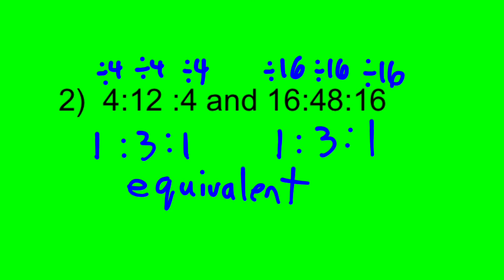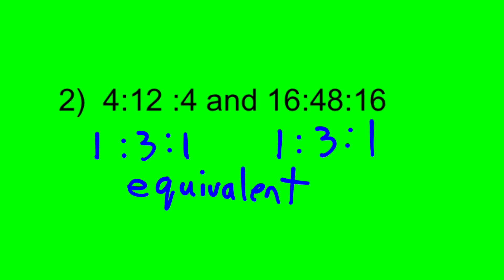You might also recognize that the second ratio is actually 4 times the size of the first ratio. So 4 times 4 equals 16, 12 times 4 equals 48, and 4 times 4 equals 16. The second ratio is 4 times the size of the first, which means multiplying each term of the first ratio by 4 gives each term of the second. So we know these ratios are equivalent.